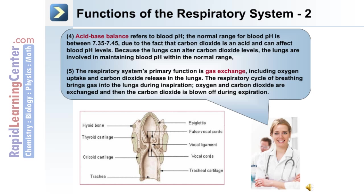The respiratory system also plays a role in acid-base balance in the body. The normal range for blood pH is between 7.35 and 7.45. Because carbon dioxide is an acid and can affect blood pH levels, the lungs play a role in maintaining this normal acid-base balance. The lungs can alter carbon dioxide levels, keeping blood pH within the normal range.